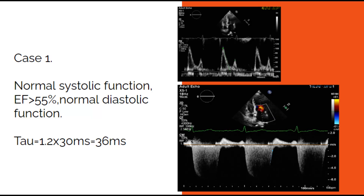Let's try the application of tau in some cases. The first case is a patient with normal systolic function and diastolic function. Tau is 1.2 times 30 ms, equals 36 ms. This is consistent with previous reports from catheter labs that normal tau is less than 40 ms.